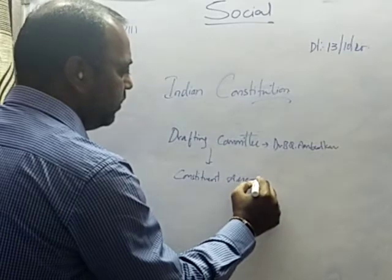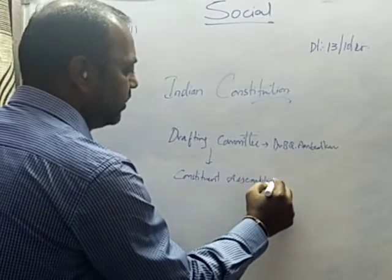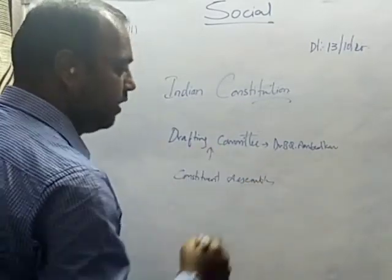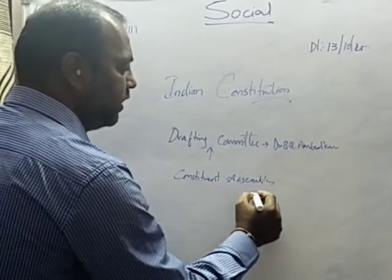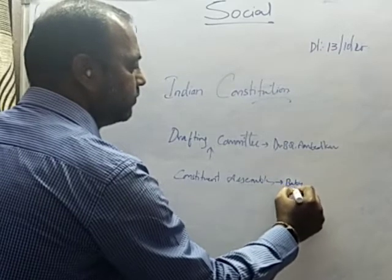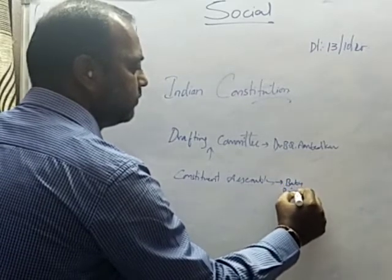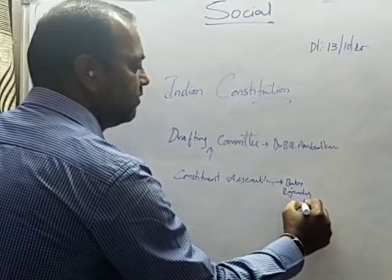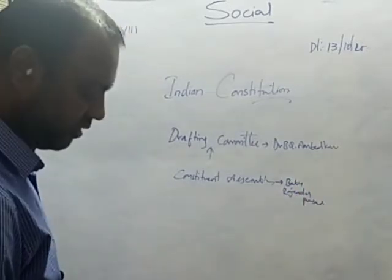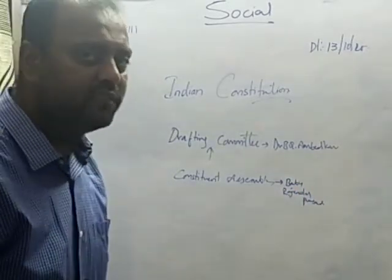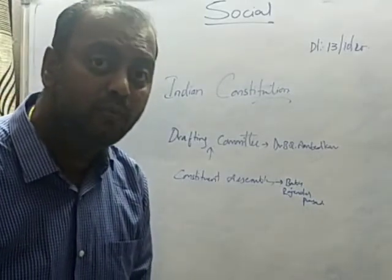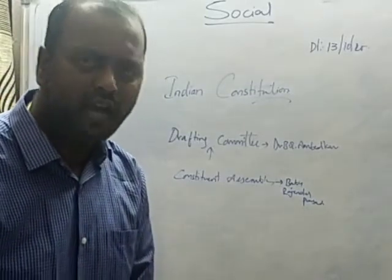The Constituent Assembly appointed the Drafting Committee. Who is the president of the Constituent Assembly? It is Babu Rajendra Prasad. He is considered the first president of India — Dr. Babu Rajendra Prasad is considered the first president of India.